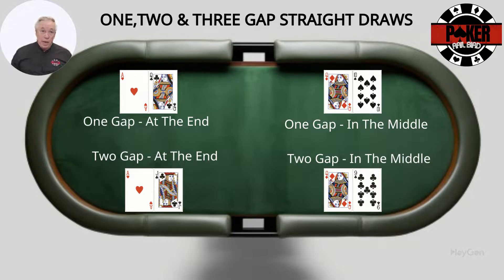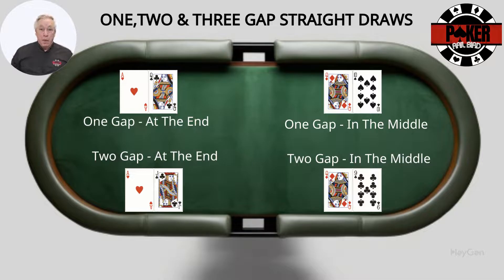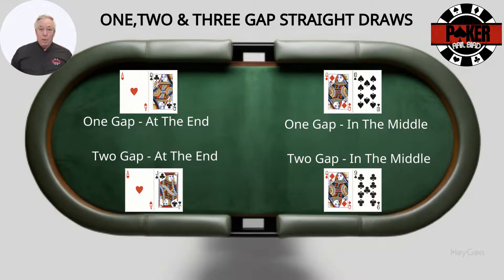When we get to three-gap hands, these are generally not advisable to play if you're hoping to make a straight, as the probabilities are quite low. For example, Ace-10 has just a 4% chance, or 24 to 1 odds, and a hand like Queen-8 falls into a similar range. While some of these hands might be played for their high card value, they often come with a weak kicker, making them less attractive overall.